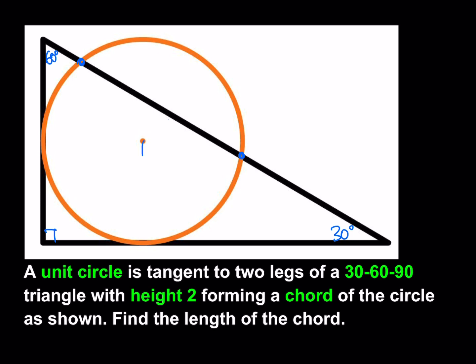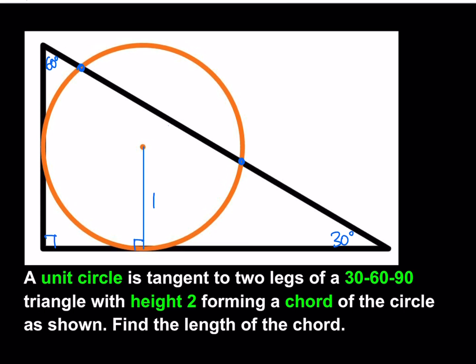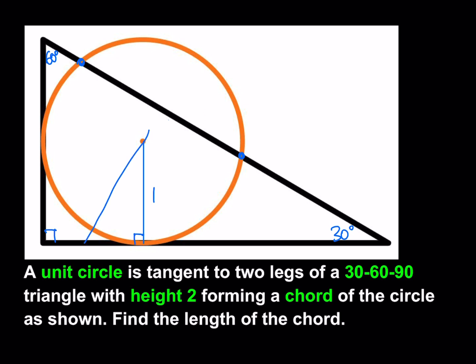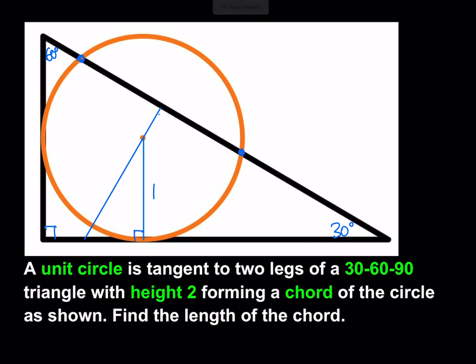I'd like to connect the center down below, making a perpendicular segment there, and we know the radius is one. I'd like to make one more connection that is perpendicular. If you have a chord of a circle and you drop a perpendicular from the center to the midpoint of the chord, that segment is perpendicular — so it bisects the chord. And if you connect the center to a point on the circle, that gives you the radius, so this length is also 1.